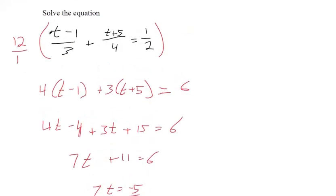So t is negative 5 sevenths. The fraction is usually the hardest part there, dealing with all those fractions. That's what I use to get rid of the fraction, but there's other methods.